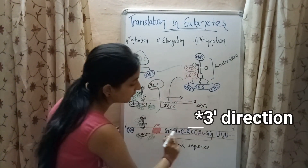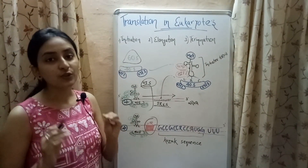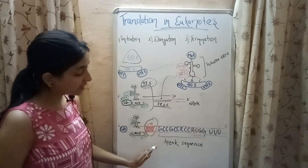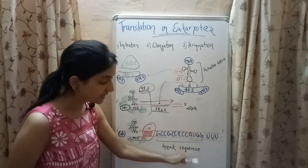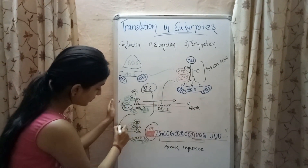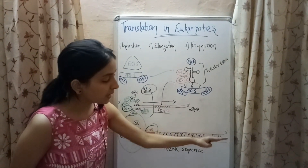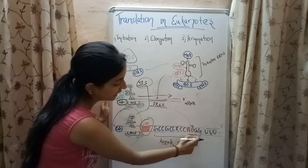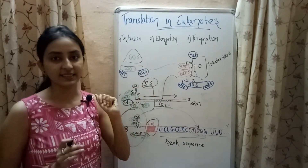After attachment to either the cap region or the IRES, the 43S pre-initiation complex starts moving in the 5' to 3' direction. It crosses the untranslated region (UTR) of the mRNA and then reaches a sequence known as the Kozak consensus sequence, which contains the initiation codon AUG. The complex attaches to the AUG codon and then starts the elongation process.